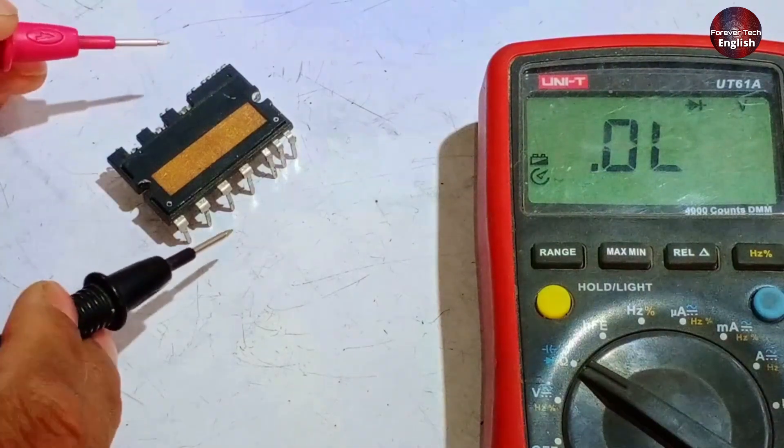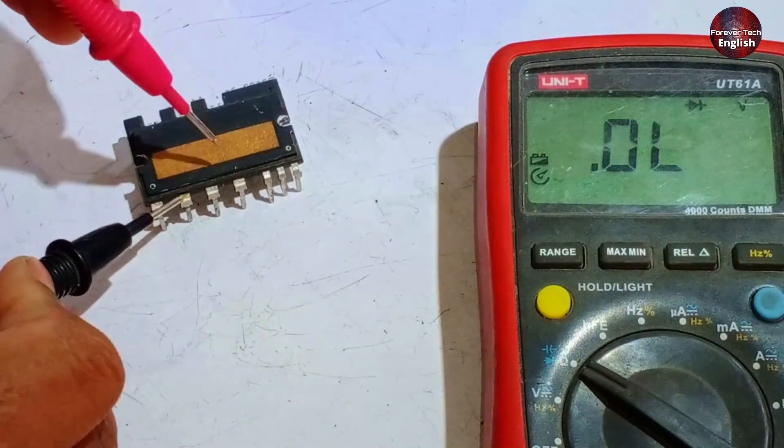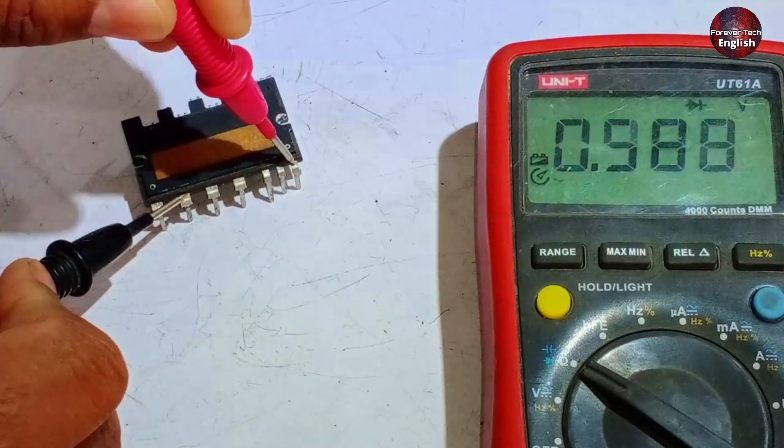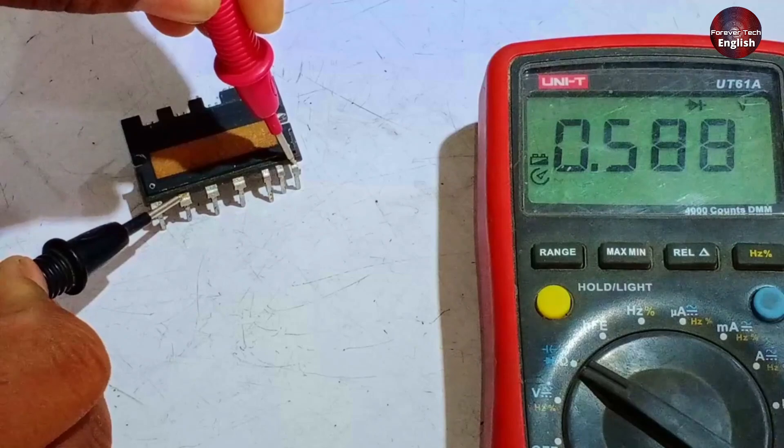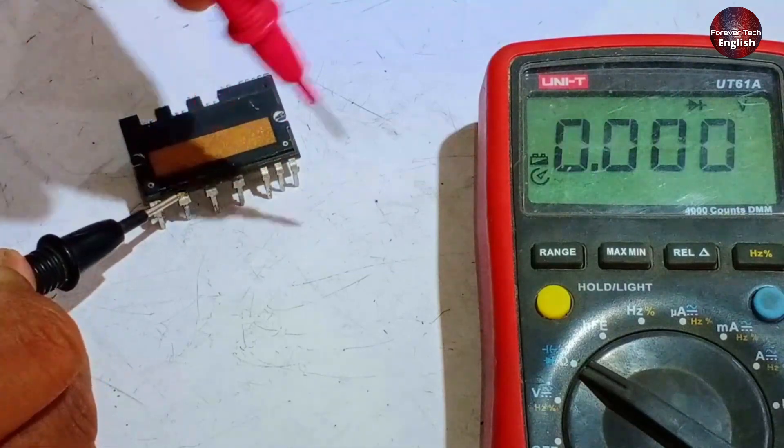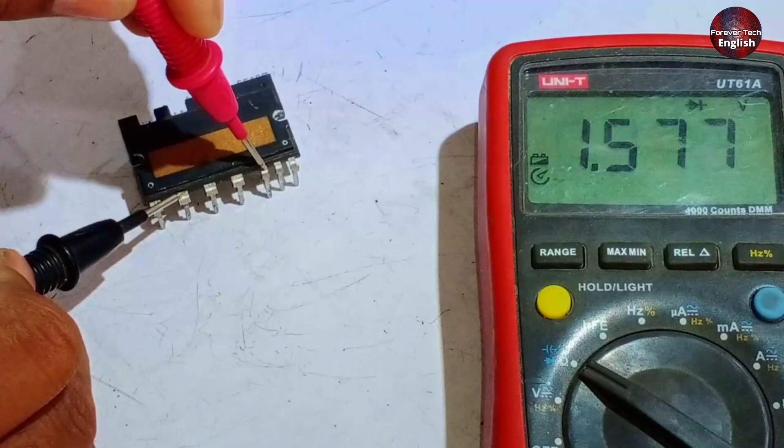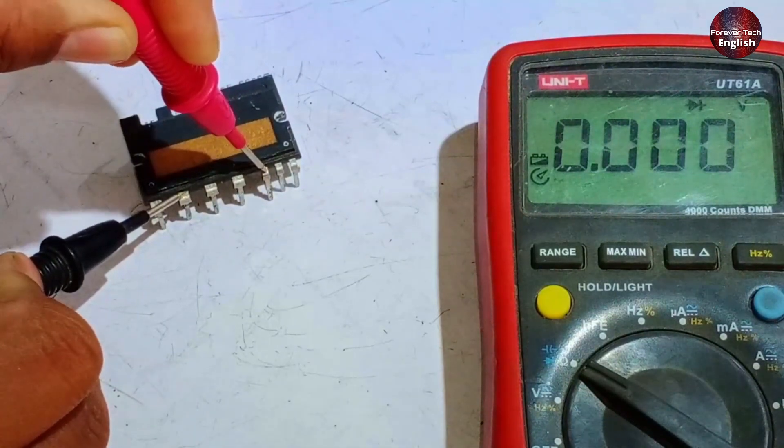The next test we'll perform is with pin 26. When we place the positive probe on pin 26, the value on pin 21 should show correctly, which it does because we are checking it across a diode. After that, no value should appear on pins 22 and 23, but they are showing values here, indicating that the IGBT is shorted and connected, so these values shouldn't be displayed.